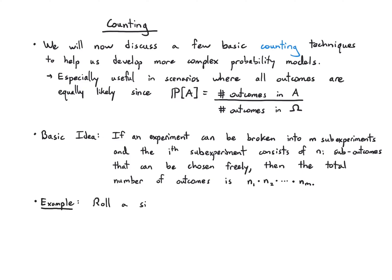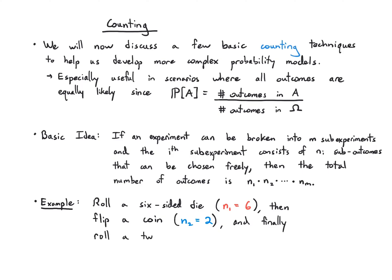As an example, let's say you have this kind of experiment: you roll a die, then flip a coin, and then roll another 12-sided die. Then the total number of outcomes you could possibly see is 6 times 2 times 12, which is 144.